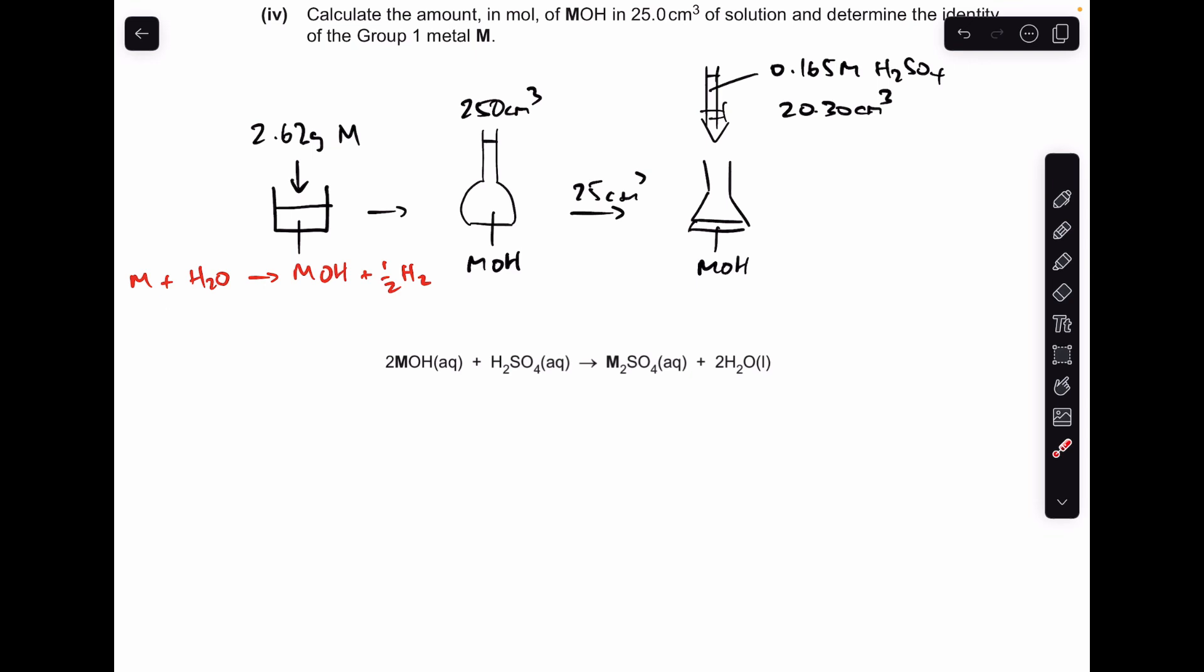So obviously in this beaker now we've got the MOH, which has gone into the 250 cm³ volumetric flask, and then they've taken 25 cm³ out and titrated it with this 0.165 moles per dm³ sulfuric acid, which we've just worked out the mean titre before: 20.30 cm³. And there's just a reminder of the titration equation.